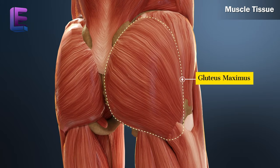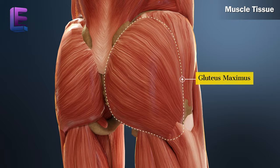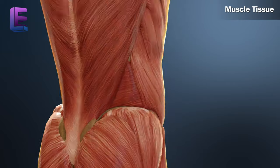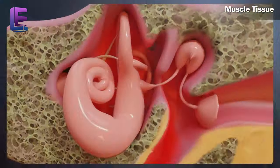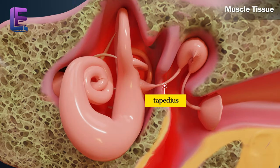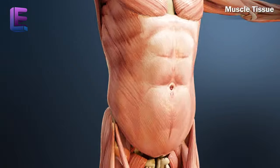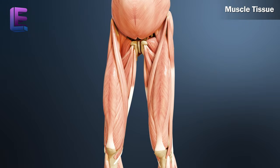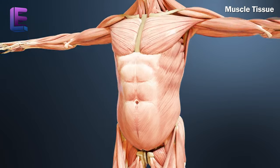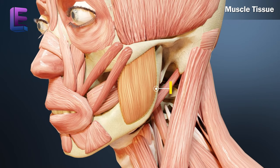Gluteus maximus is the largest muscle. The smallest muscle is the stapedius. The longest muscle is the sartorius. The strongest muscle is the masseter.